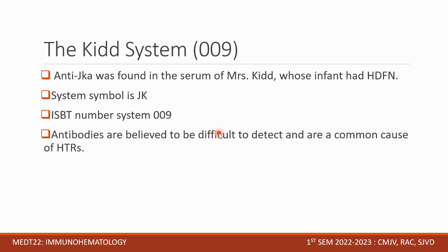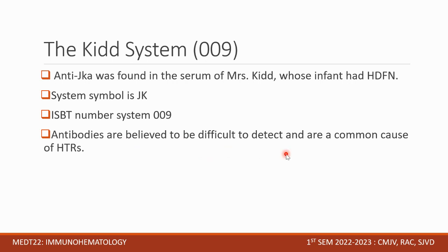Next we have the Kidd system, ISBT number 009. Anti-JKA was found in the serum of Mrs. Kidd, whose infant had HDFN. The system symbol is JK. Antibodies of this system are believed to be difficult to detect and are a common cause of hemolytic transfusion reactions.